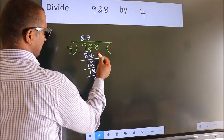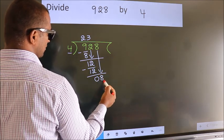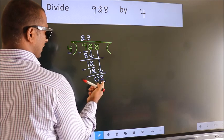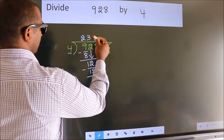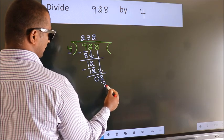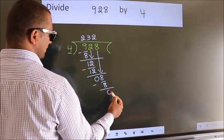After this, bring down the beside number. So, 8 down. So, 8. When do we get 8 in the 4 table? 4 twos, 8. Now we subtract. We get 0.